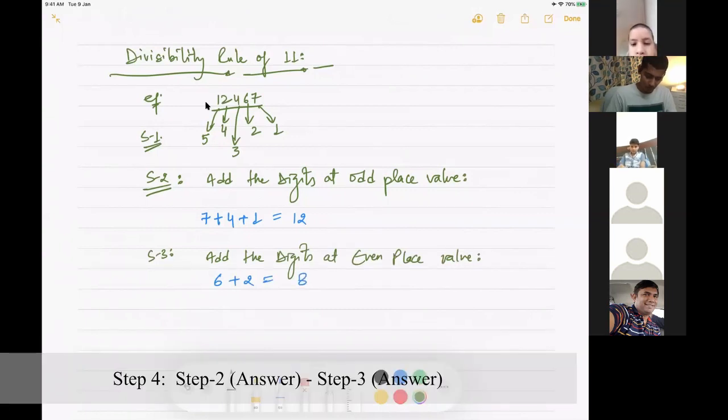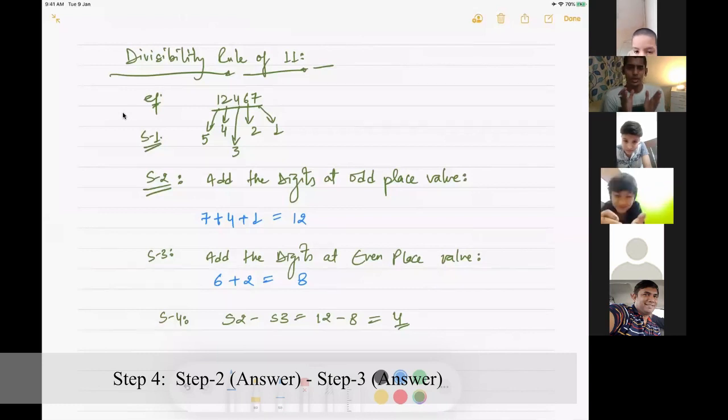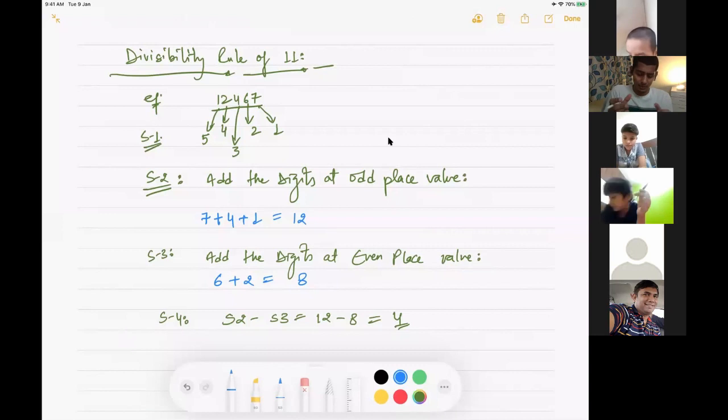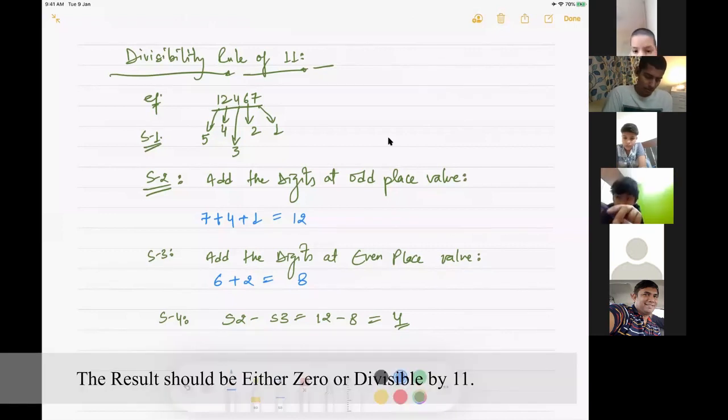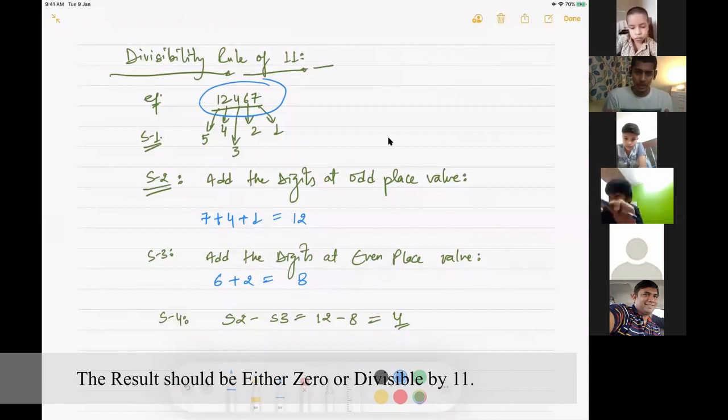And finally step 4, we will do step 2 minus step 3. Step 2, how much value is in step 2? 12. 12 minus 8 is 4. So the divisibility rule of 11 is, if the value in step 4 is 0, then the result is divisible by 11. In either case, the original number which was 12467 will be divisible by 11. Otherwise it won't be divisible, right?